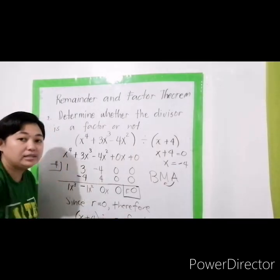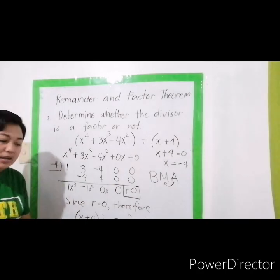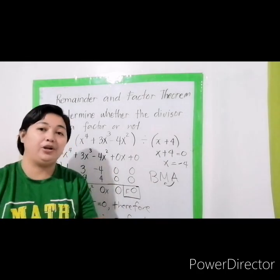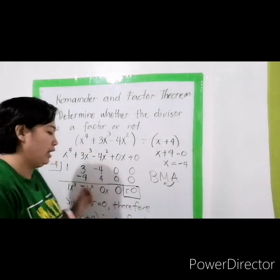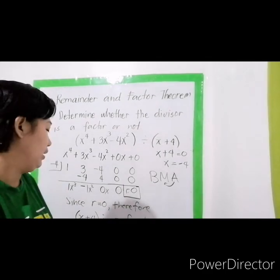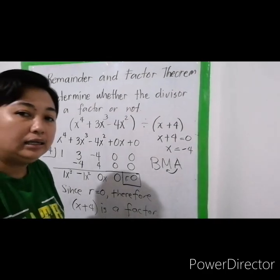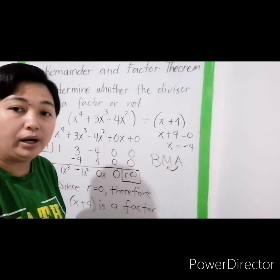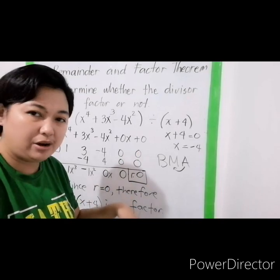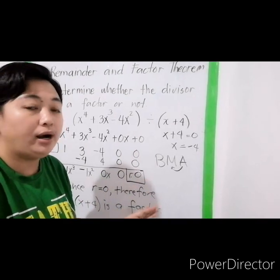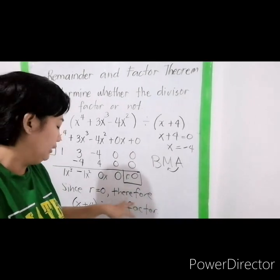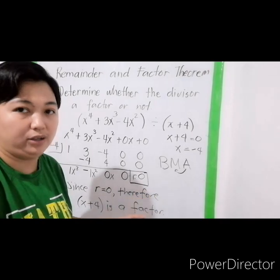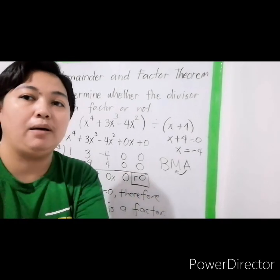That's it — that's what we do with the factor theorem. If the remainder is 0, write: therefore, the given divisor is a factor. If the remainder is not 0, write: therefore, the given divisor is not a factor.